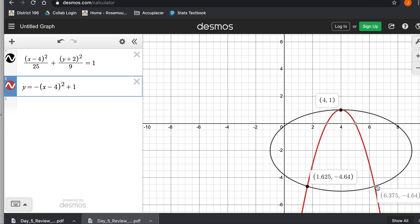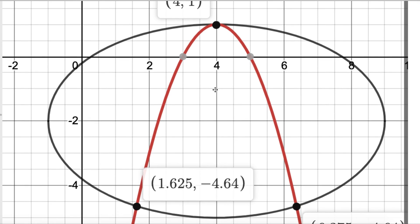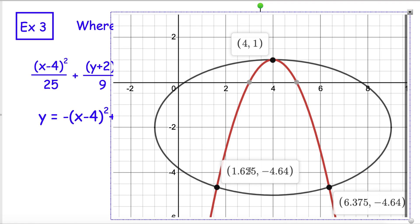So where are our intersection points? Well, we can just click on there. So in this case, there are three intersection points. There are 4, 1, and 1.625 comma negative 4.64. And I don't know if this is approximated or not, so these might be approximate values of what Desmos is giving us. So if it asks, what are the solutions? Where do these two graphs intersect? There are the three answers. We have 4, 1, 1.625 comma negative 4.64, and 6.375, negative 4.64. So whenever you're solving by graphing, all you're really doing is you're finding where these two graphs intersect.